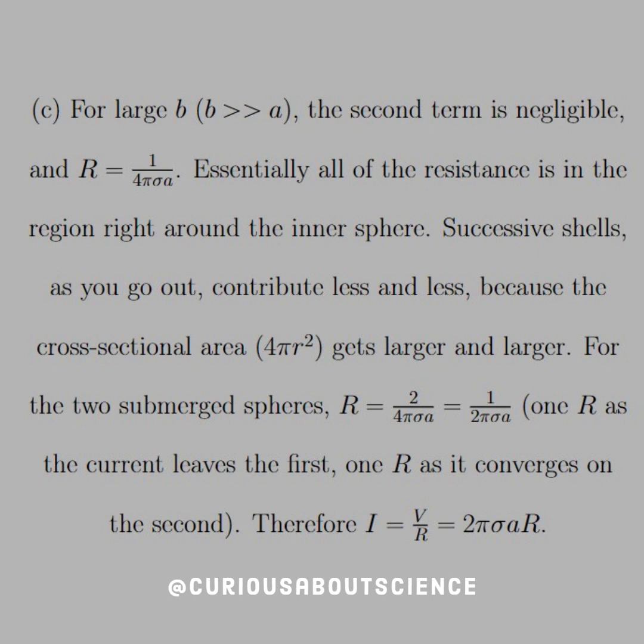Successive shells, as you would go out, contribute less and less because of the cross-sectional area. 4 pi r squared gets larger and larger. For the two submerged spheres, then R is equal to 2 times 1 over 4 pi sigma A, so that simplifies to 1 over 2 pi sigma A. One R as the current leaves the first and one R as the current converges to the second. Therefore, I is equal to V over R, and we just simplify that through, which yields 2 pi sigma A R.